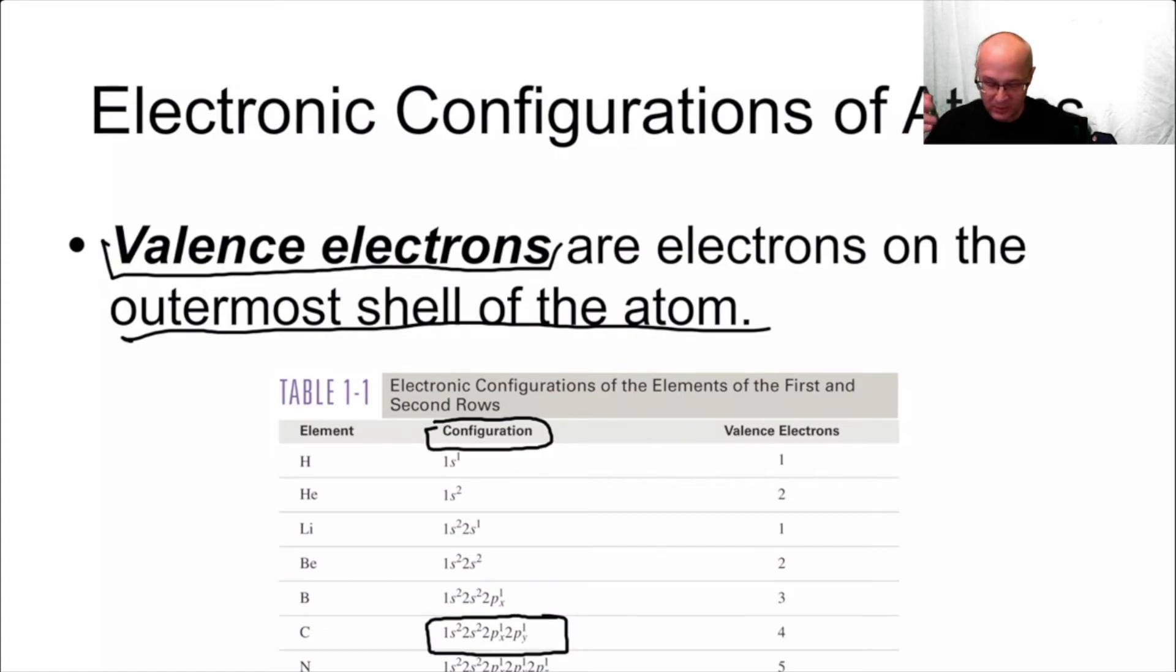I'm assuming everyone in this class can do this: 1s2, 2s2, 2p2, or 2px1, 2py1. Something like that is fine. I'm assuming all of you can do it. And all of you understand why carbon has four valence electrons. I'm assuming all of you can look at the periodic table and say carbon has four, oxygen has six, chlorine has seven, neon has eight, xenon has eight, sulfur has six, nitrogen has five. I'm assuming all of you can look at the periodic table and just do that without knowing the electron configuration because it's in the group number.